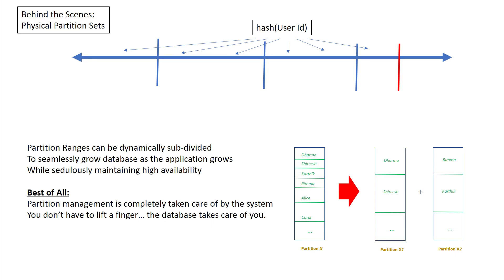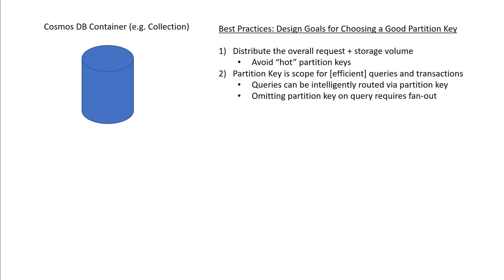While Cosmos DB will take care of 99% of the effort for partition management, you still need to put in 1% of the effort — choosing a good partition key. You want to choose a partition key that fits two design goals. Number one, you want to distribute your overall request and storage volumes across a very large number of partition keys as evenly as possible.